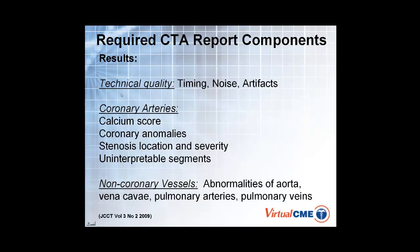For the coronary arteries, if a calcium score is done, you should report individual vessel scores as well as a total score and estimated severity. If there are any coronary anomalies, those should be described. The coronary stenosis, if present, should describe both the location and the severity, as well as some information about the lesion itself. If there are some uninterpretable segments — as we discussed in the first case where we had some motion artifact in the distal right coronary — we need to transmit that information. In that particular case, it didn't affect management because we already found some severe disease elsewhere.